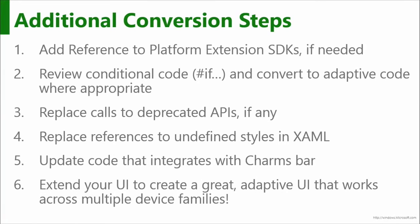Let's switch back to slides and talk about the additional conversion steps. Here they are in outline. First, you need to add references to the platform extension SDKs — we did that, like mobile or desktop. Then you need to look at any #if code and convert to adaptive code where appropriate. If there's any #if in your existing application code expecting to run on either Windows Phone or desktop, you need to address that. We now need to use adaptive code — we don't want to use #if because that implies multiple binaries.